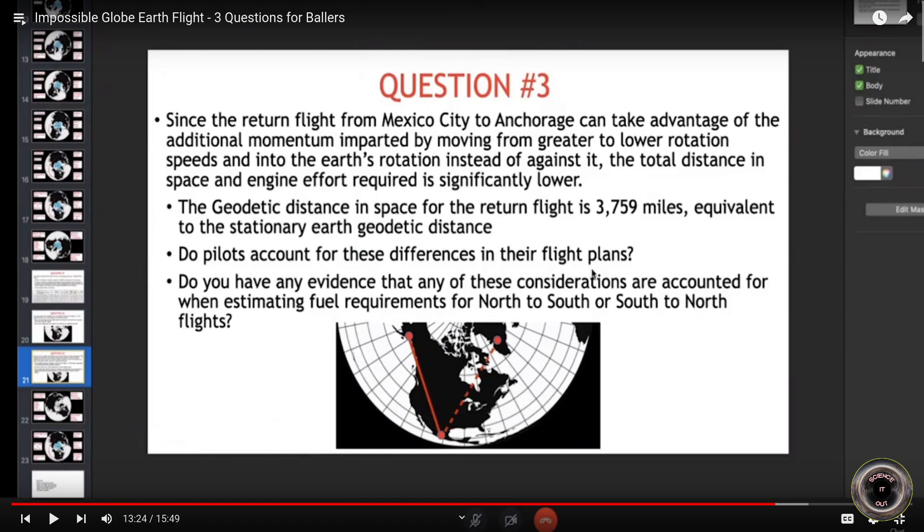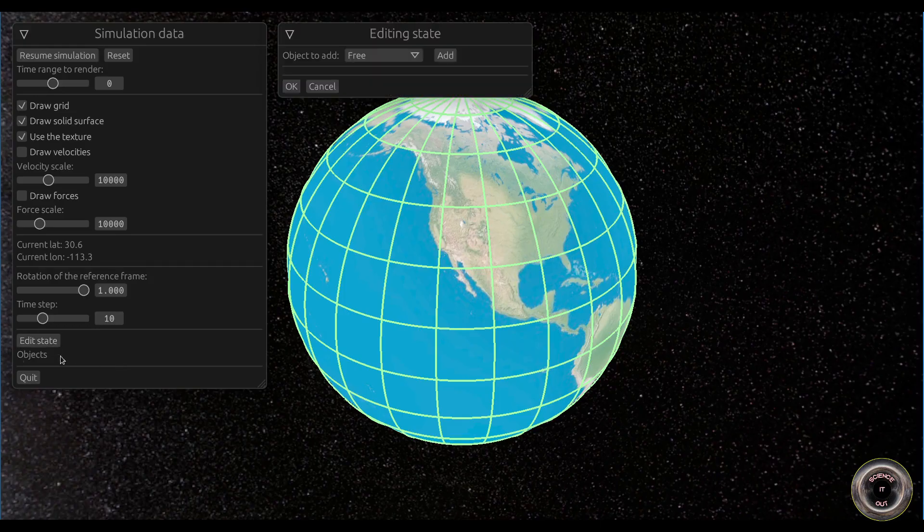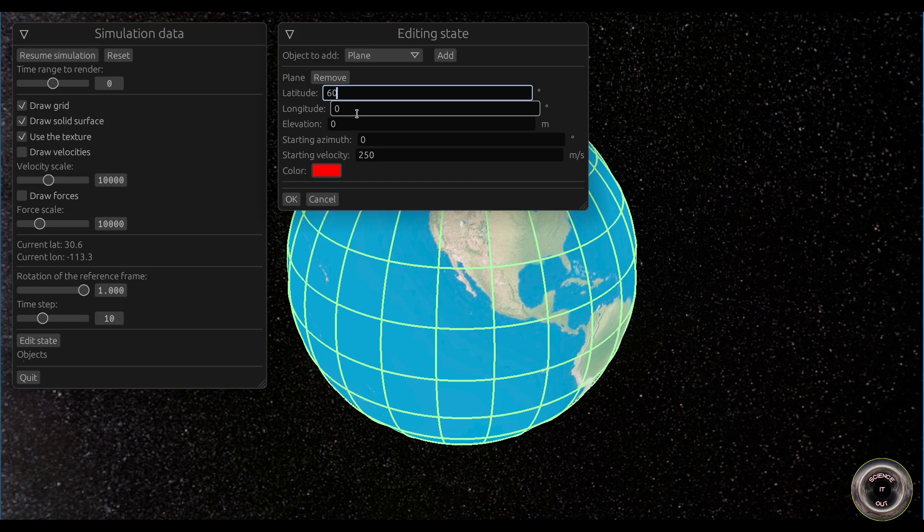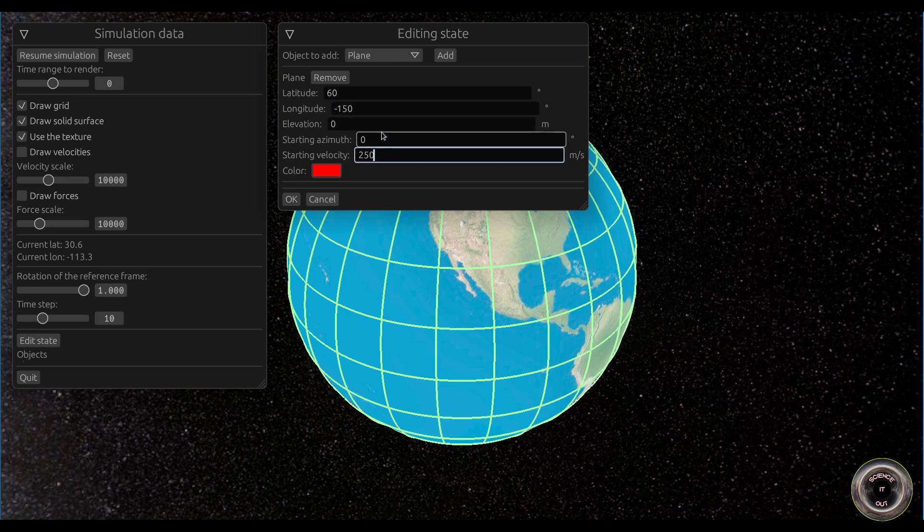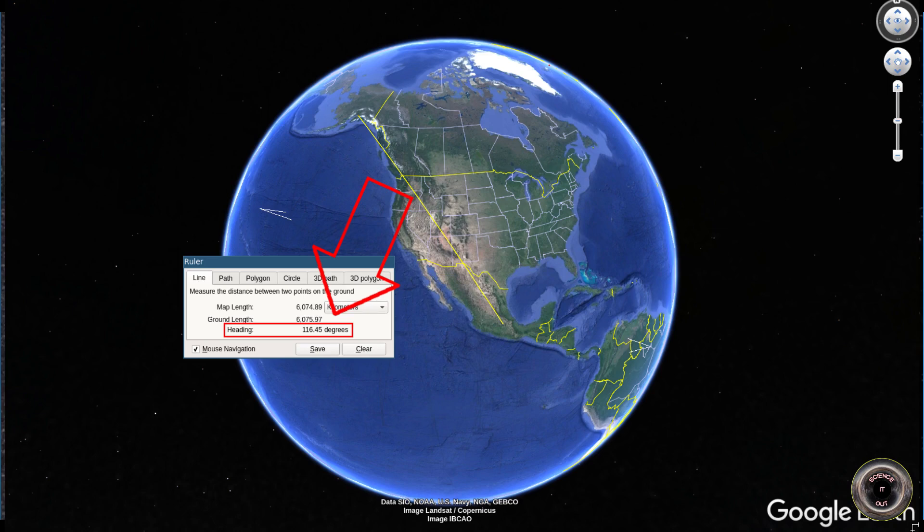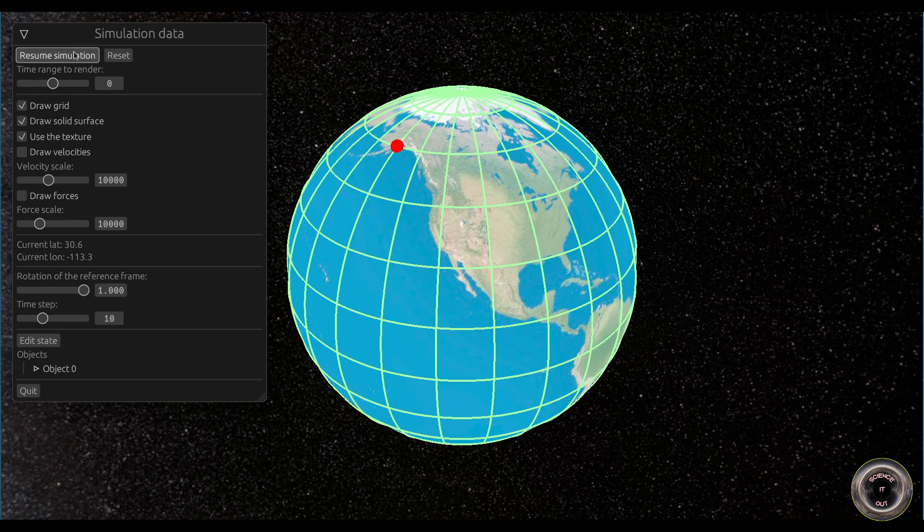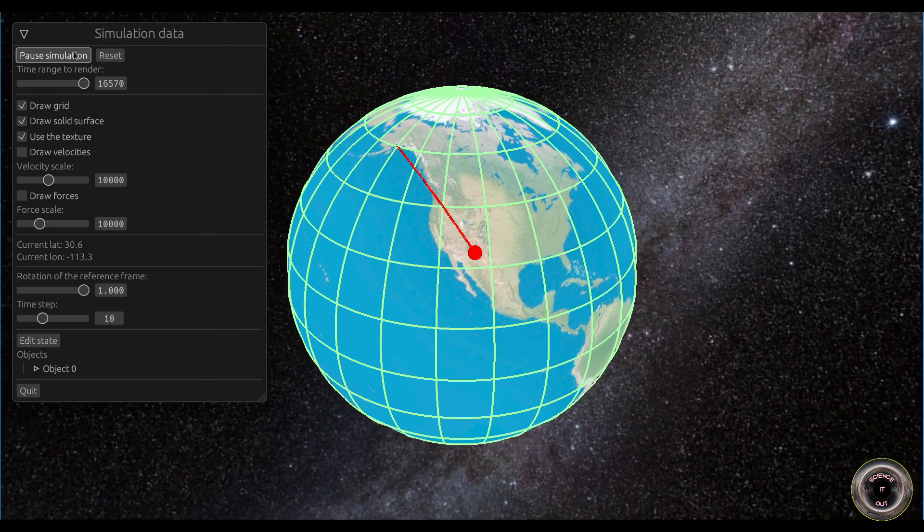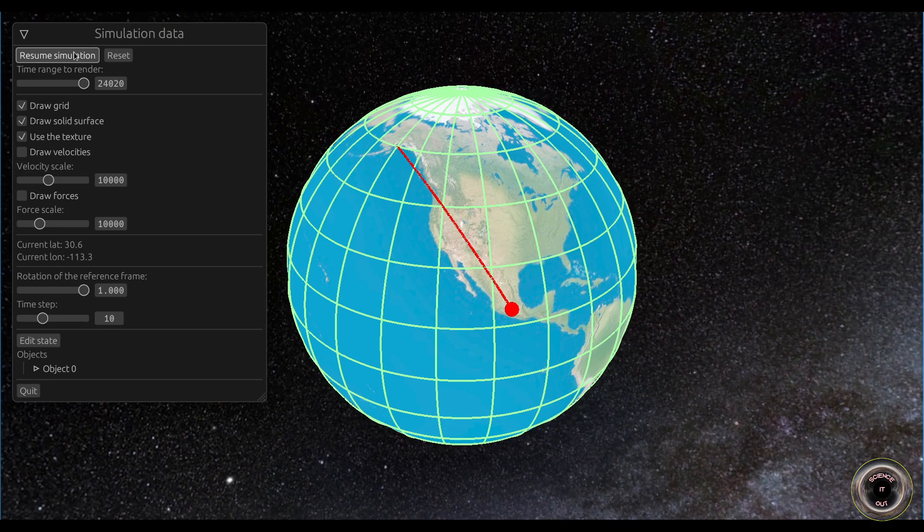Let's take a look at some simulations and see what they let us figure out about this flight. Let's start with a simulated plane. We'll put it at 60 degrees north, 150 degrees west, which is close to Anchorage and let it fly at 250 meters per second, which is 900 kilometers per hour or about 560 miles per hour. The starting azimuth will be 116.5, which is the heading from Anchorage to Mexico City. Let's start with the simulation. And we can see that the plane flies towards Mexico while the earth rotates, which we can see by looking at the sky. After some time the plane reaches Mexico.